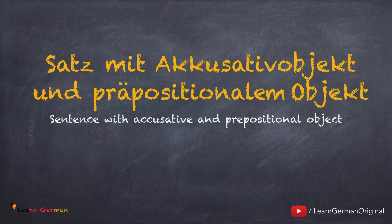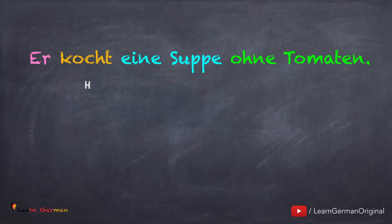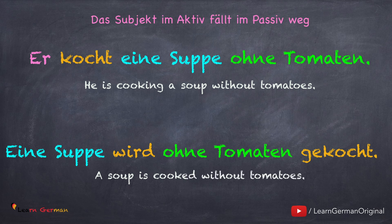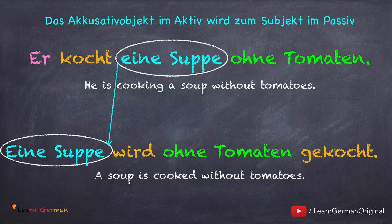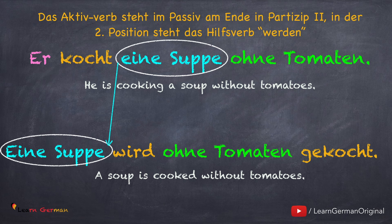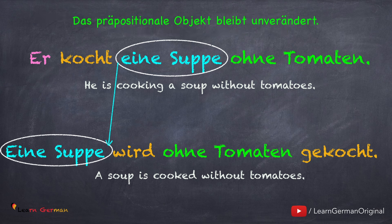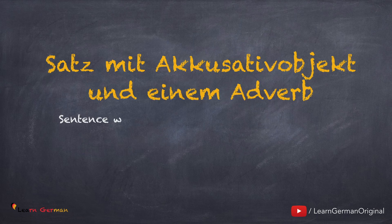Jetzt kommen wir zu einem Satz mit Akkusativobjekt und Präpositionalobjekt. Er kocht eine Suppe ohne Tomaten. Hier auch wird das Subjekt wegfallen. Eine Suppe wird ohne Tomaten gekocht. Das Akkusativobjekt die Suppe wird zum Subjekt im Passiv. Das Verb kochen steht am Ende in Partizip 2 — gekocht. Das Präpositionalobjekt ohne Tomaten bleibt unverändert.